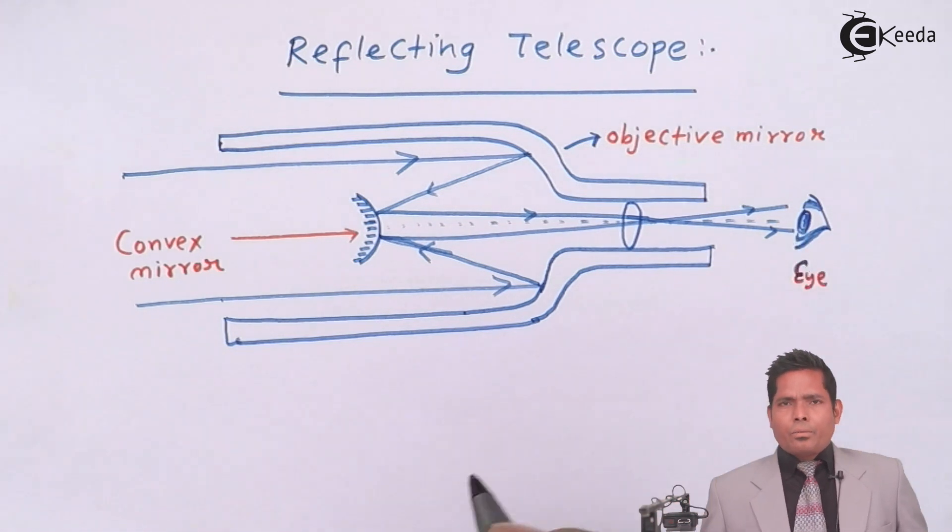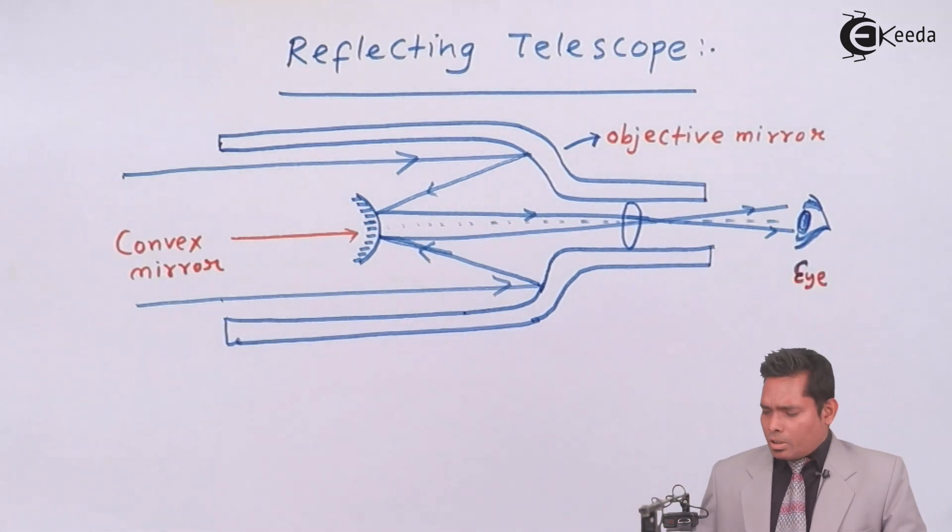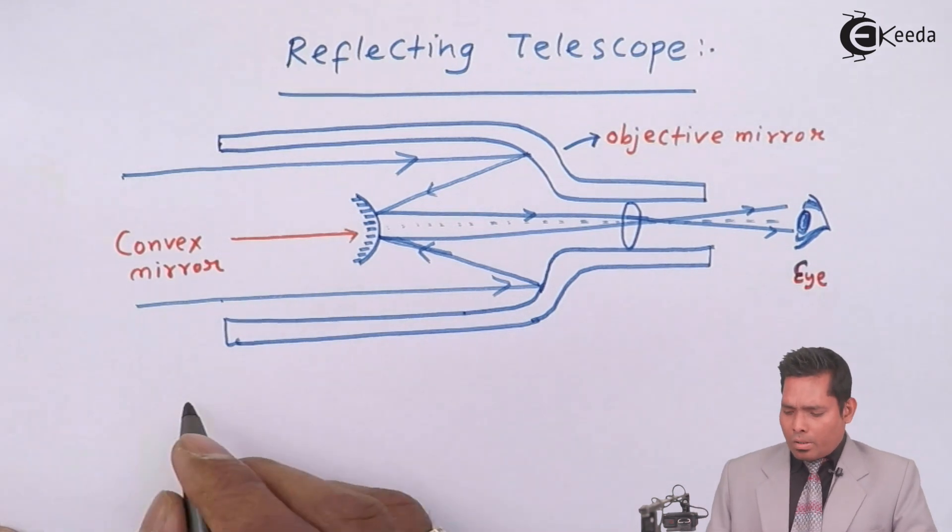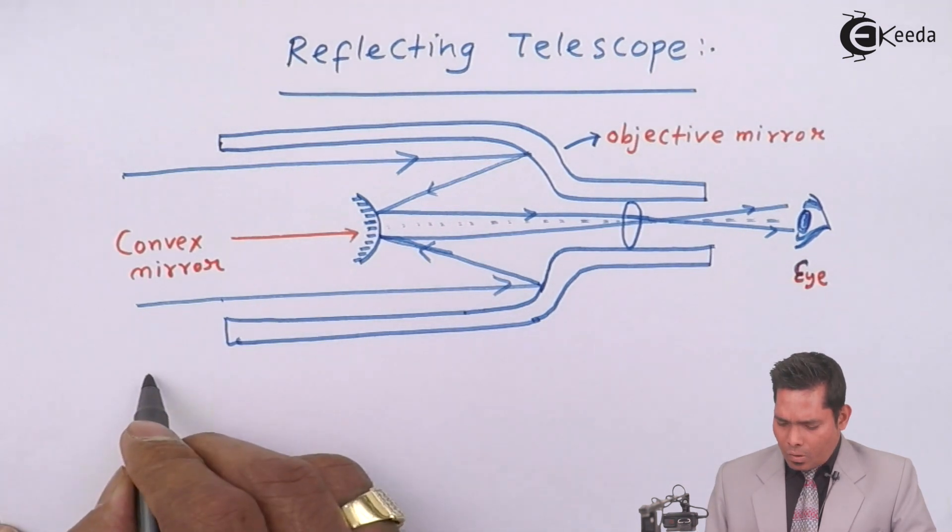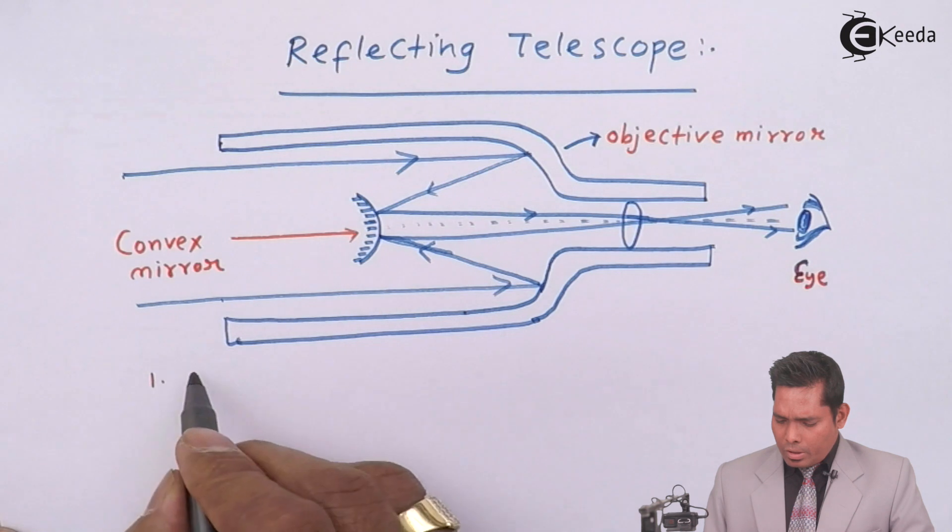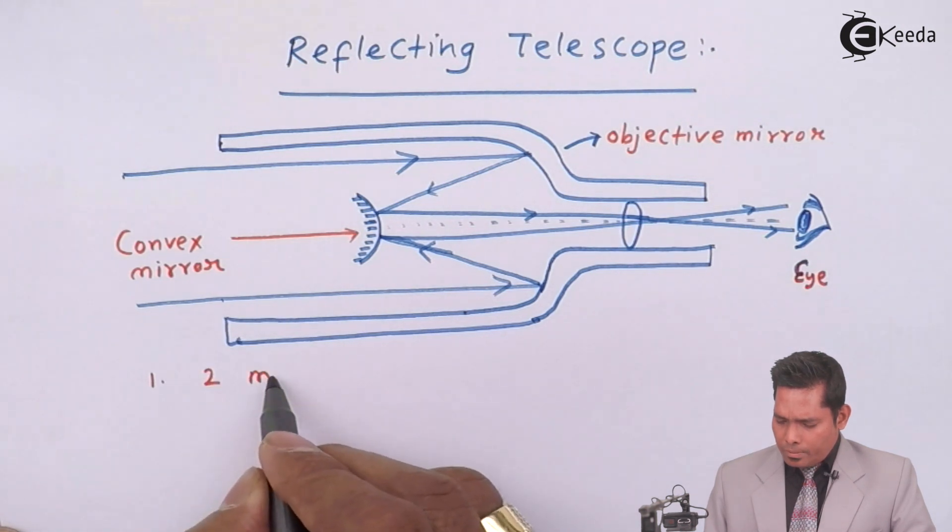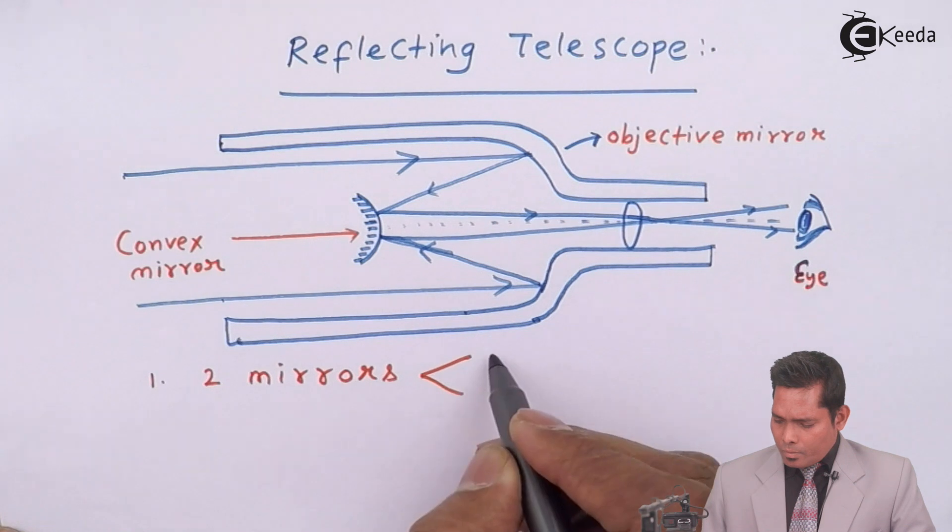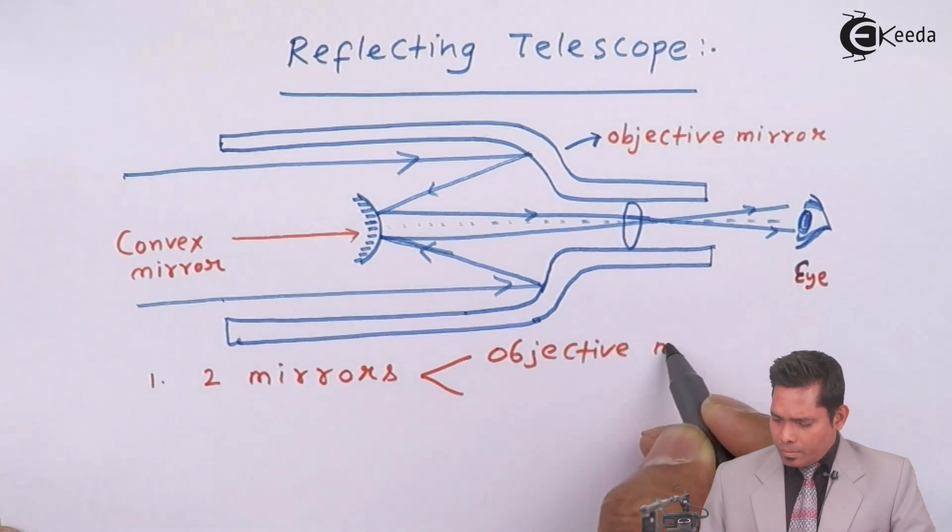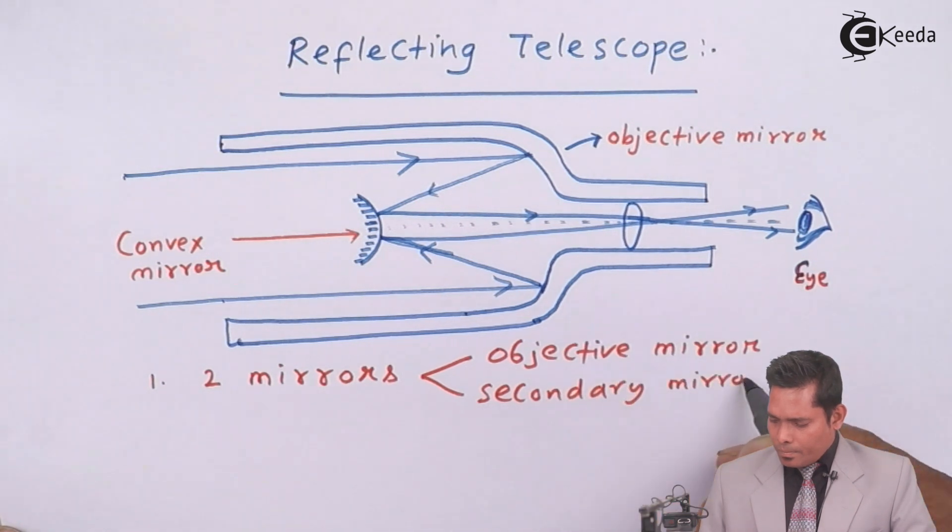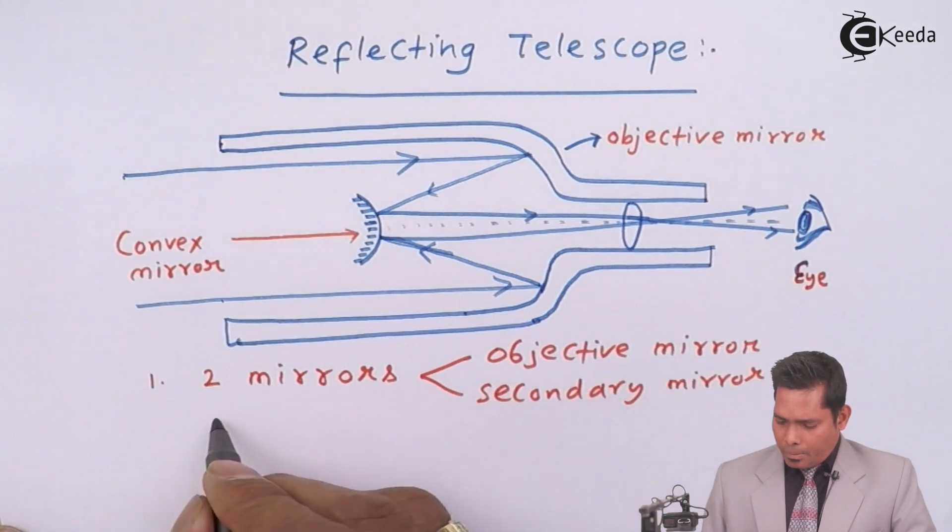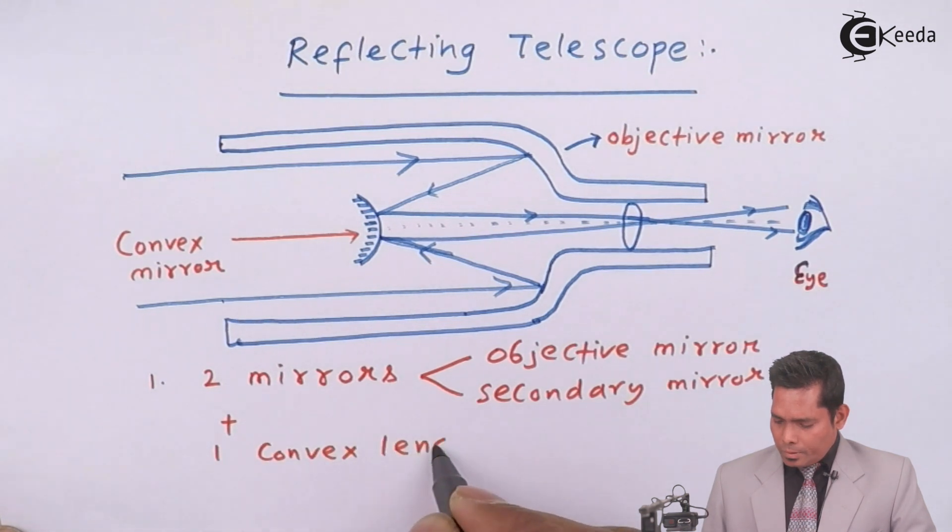So here, because the rays are coming far off and reflected from the objective mirror, fall on this mirror, and then get reflected to the lens and fall on the convex lens. So here the image formed at the eye that we see is free from chromatic aberrations. So this is the advantage of the reflecting telescope. So just write down the main advantage: first of all, we are using two mirrors and plus one lens.